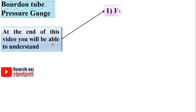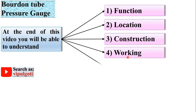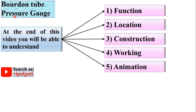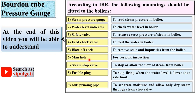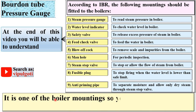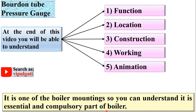At the end of this video you will be able to understand the function, location, construction, working, and animation of the pressure gauge. This is the list of the boiler mountings according to IBR, that means Indian Boiler Regulation. Out of all these boiler mountings, today we will see about the steam pressure gauge. It is one of the boiler mountings, so you can understand it is an essential and compulsory part of the boiler.